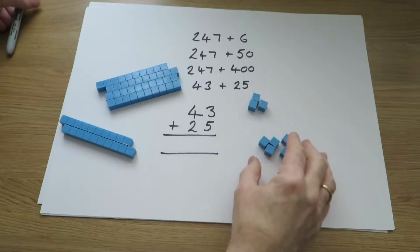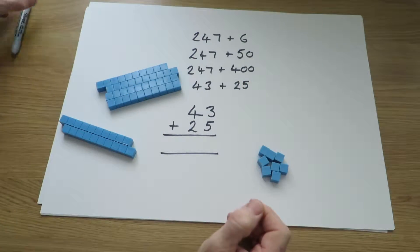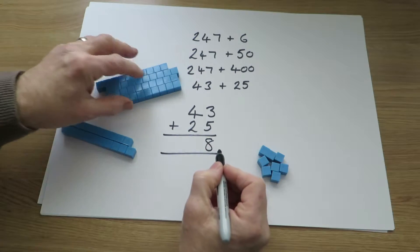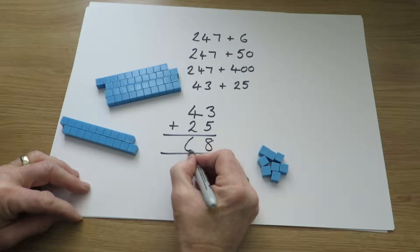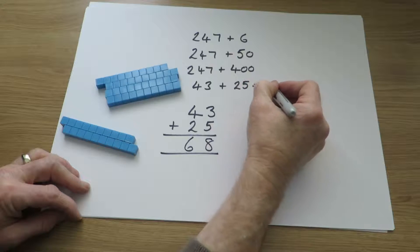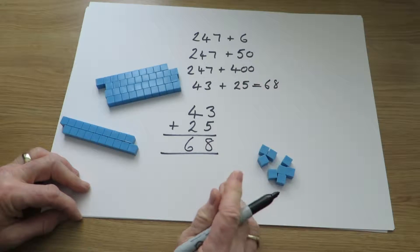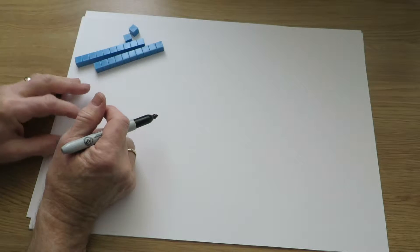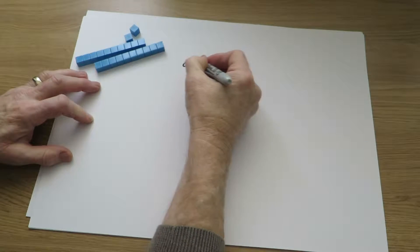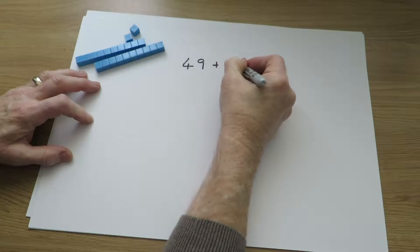Adding the units, 3 add 5 gives us 8 units. 4 tens and 2 tens gives us 6 tens, so we reach the answer 68.